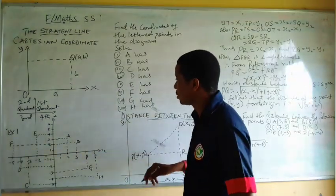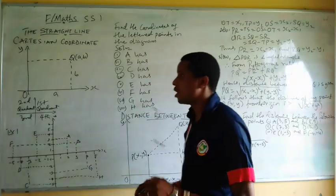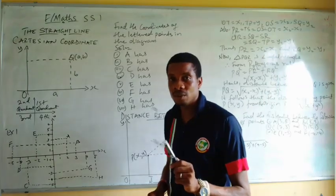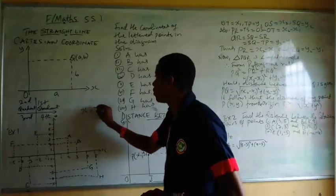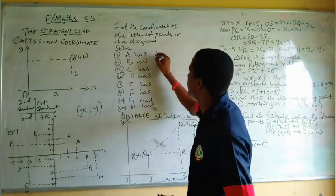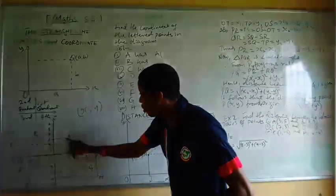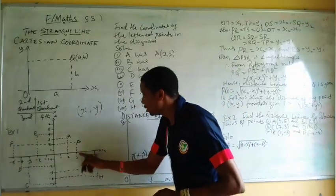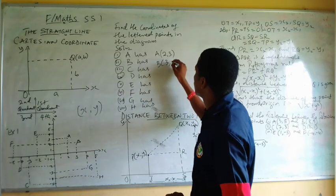For point A, let's trace it to the X axis and then to the Y axis. In writing coordinates, the X axis comes first — you write X before Y. So the coordinates of A are 2 comma 3. Then B has coordinates 3 comma 2.